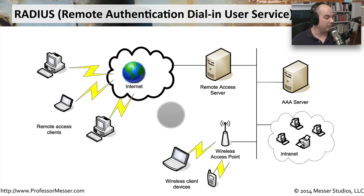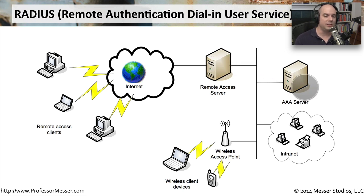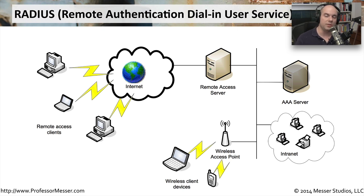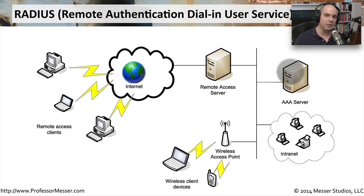When you log in, the remote access server — which has been configured to use the RADIUS protocol — communicates back to a centralized AAA server to authenticate users. You're prompted for a username and password, and possibly an additional piece of information for two-factor authentication, such as a random number. All of that is sent to the AAA server. RADIUS typically uses UDP over port 1812 by default to provide that access.